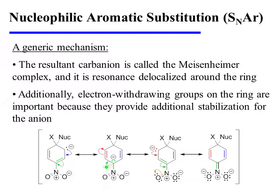A repeat of this same procedure moves the anion to yet another location on the ring. Additionally, electron-withdrawing groups on the ring are important because they provide additional stabilization for the anion. One more resonance form is possible in which the anionic character is actually delocalized outside the ring onto an oxygen atom. This is especially stabilizing because this is the only resonance form that places the negative charge on the more electronegative element, oxygen.